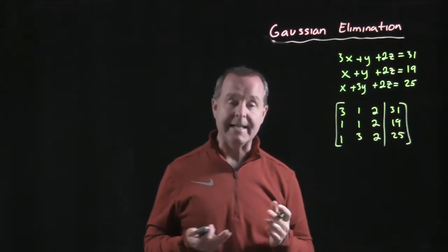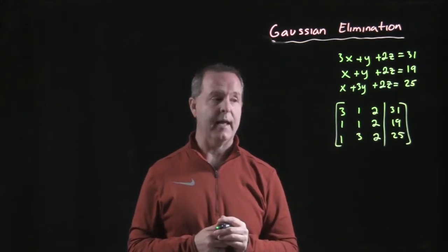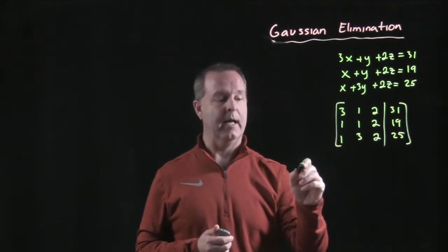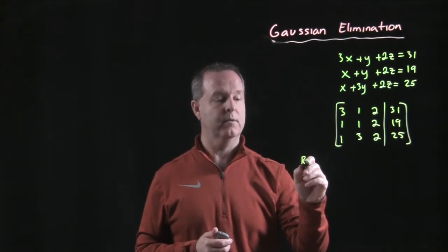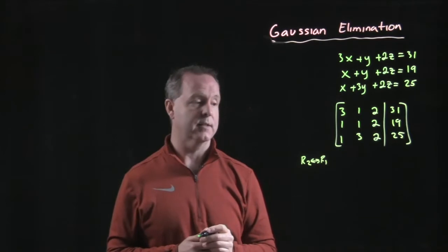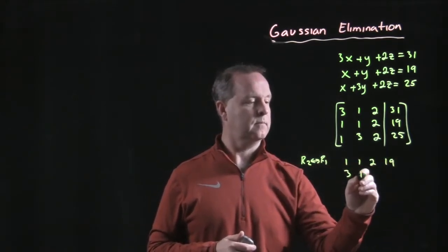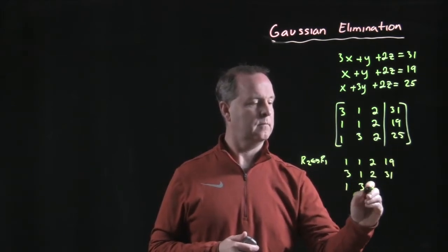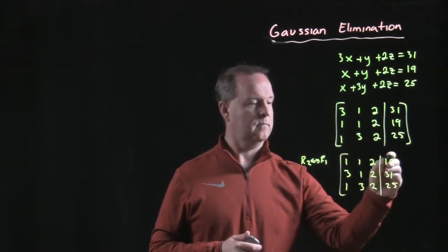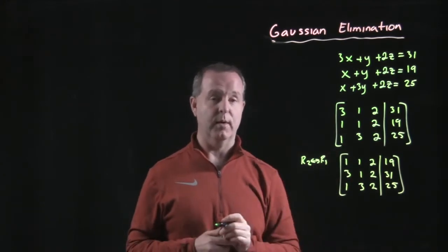First step, the next step is we want to have a one in that original place. So in order to do that, I'm going to change row two with row one, whatever row operations. So now it becomes that. So we have a one. Check. That's what we wanted to do.